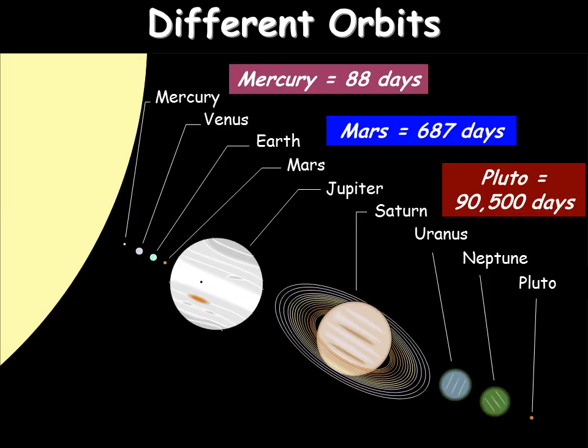All different planets have different orbit times. There is a pattern — as you move outwards from Mercury, where it only takes 88 Earth days to go around the Sun, then Mars, and then Pluto, you can see that the time to orbit the Sun is much, much bigger. That's because it has much further to go, and also because Mercury and the planets nearer the Sun travel at a faster speed.